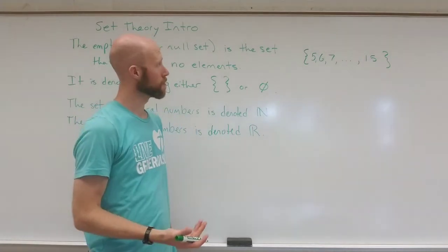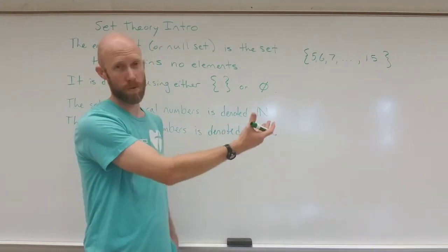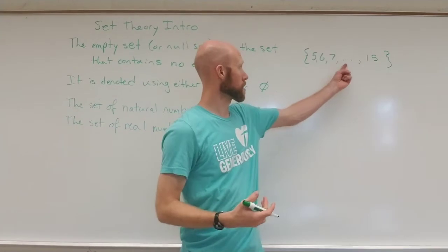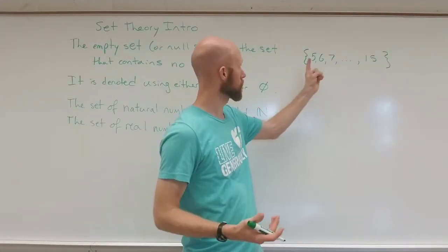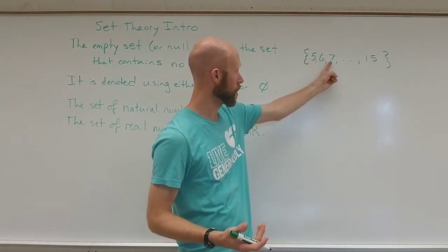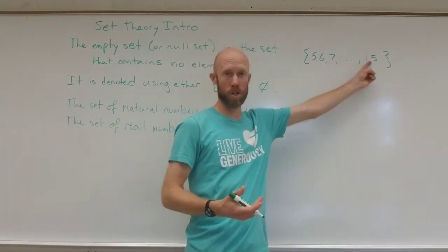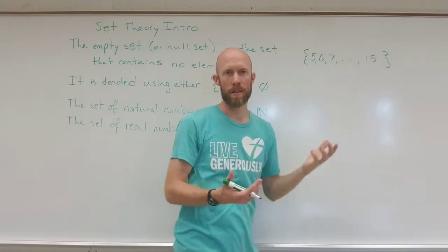And that's fine. And that's the roster form right. And of course I didn't actually list them all out. I used an ellipsis to fill in the gap. Once I've established that we started 5 and increased by 1, I fill in the gap and then show where the ending point is and that'd be sufficient.